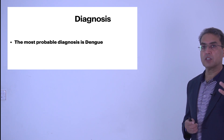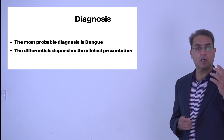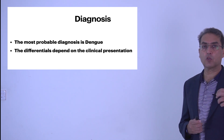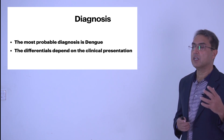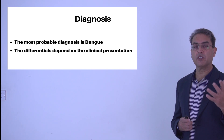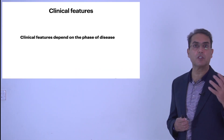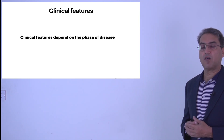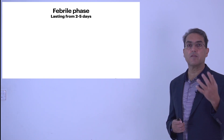What are the other possible differentials? The differentials depend upon the clinical presentation of patients with dengue. We will see what could be the possible differentials of a patient who presents with dengue fever. Clinical features again depend on the patient's clinical stage at presentation. The different phases of dengue are: the febrile phase, the critical phase, and the convalescent phase.